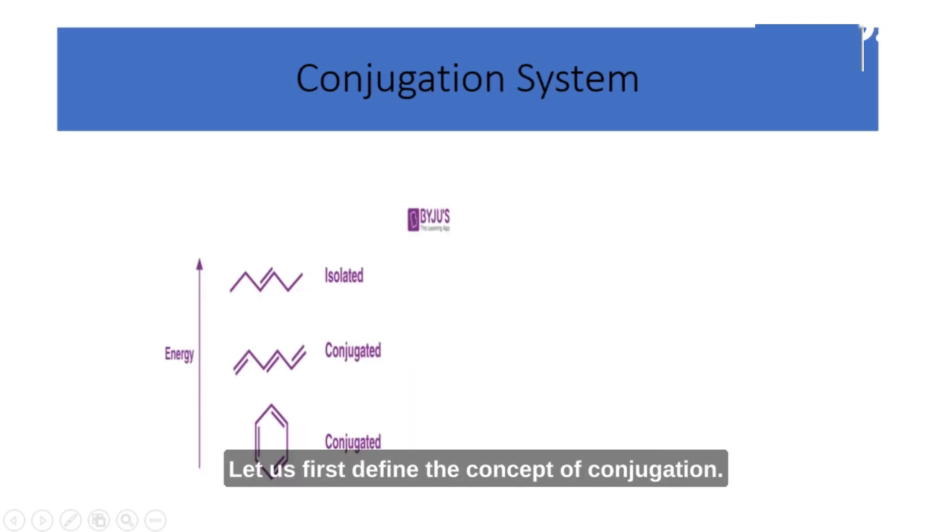Effect of conjugation. Let us first define the concept of conjugation. The primary difference between a conjugated and an isolated double bond is that a conjugated double bond refers to an organic structure with alternating double and single bonds. In contrast, an isolated double bond refers to an organic structure with no alternating double and single bonds. In this case, double bonds are arranged randomly.